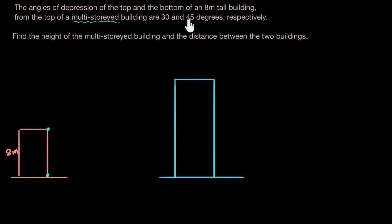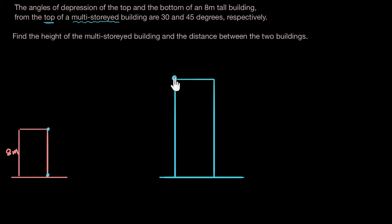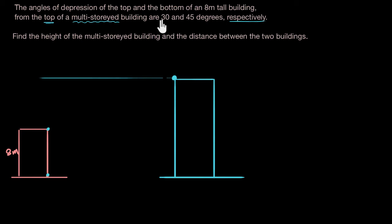Now I need to draw this part — this is the interesting part. Where do I draw this 30 and 45? The horizontal is going to be this line here. Because the angle of depression is 30 for the top and 45 for the bottom — I can see 'respectively' over here, which confirms it's 30 for the top and 45 for the bottom.